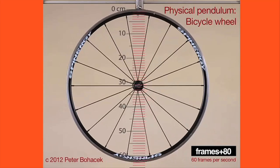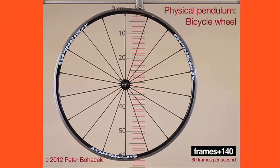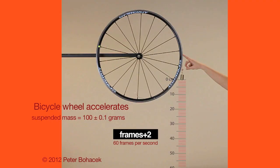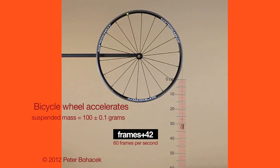Students calculate the rotational inertia of a bike wheel by watching it swing as a pendulum, and by watching it accelerate by a falling weight.